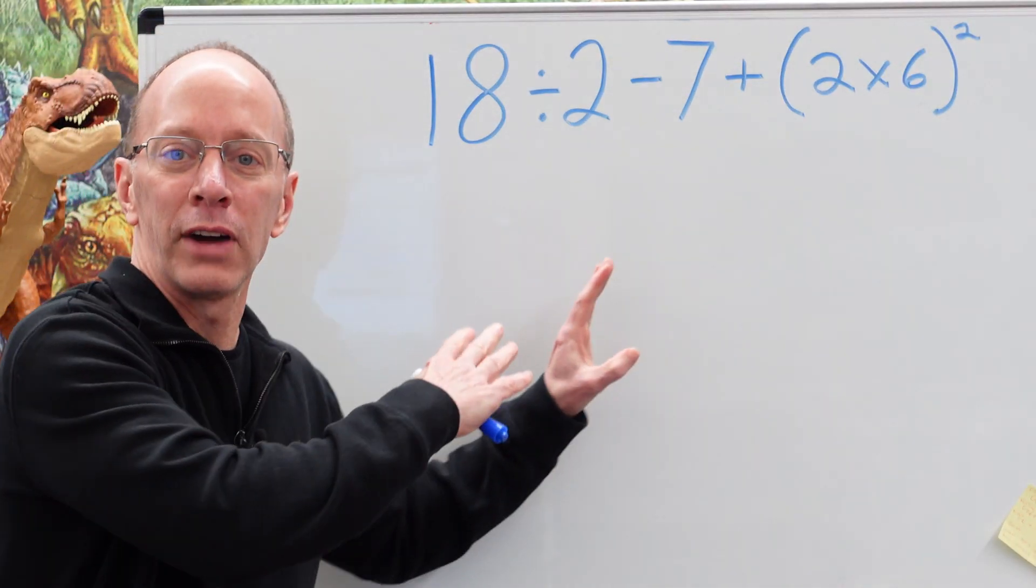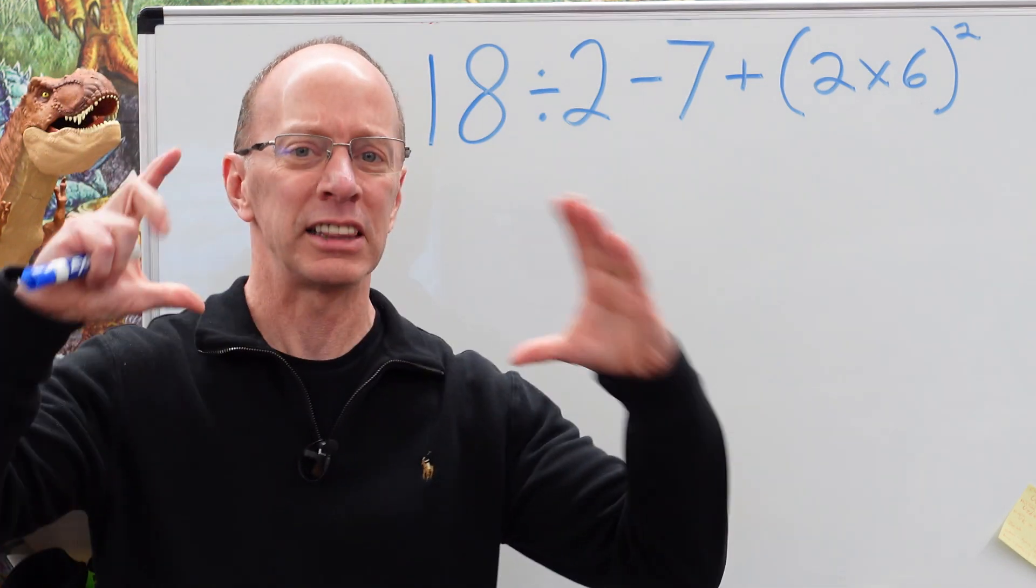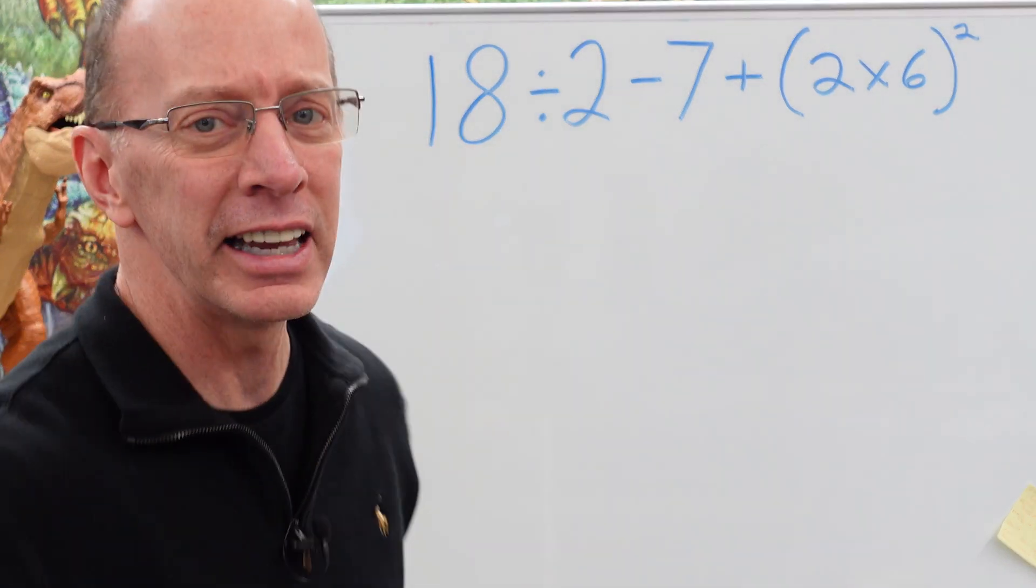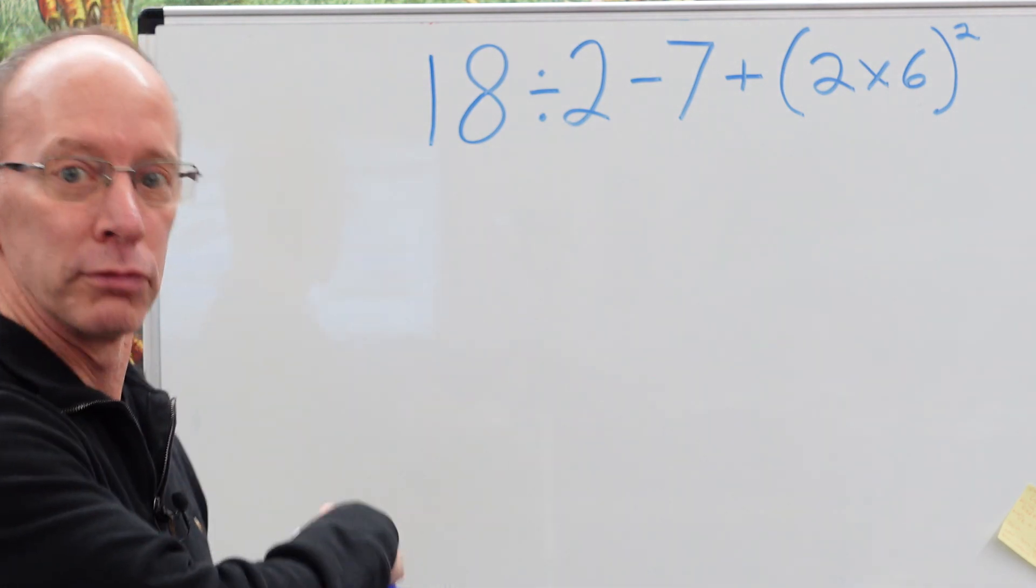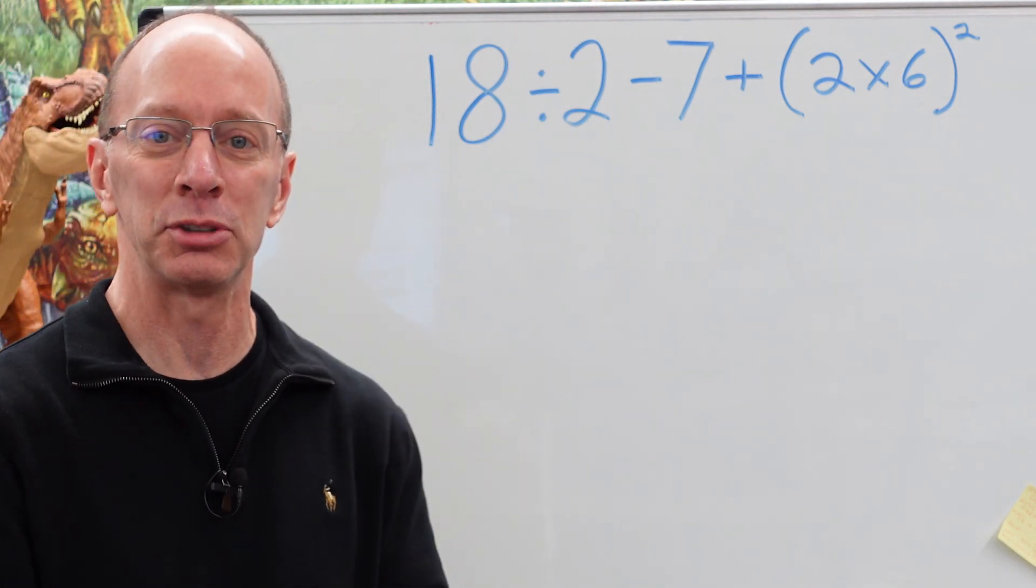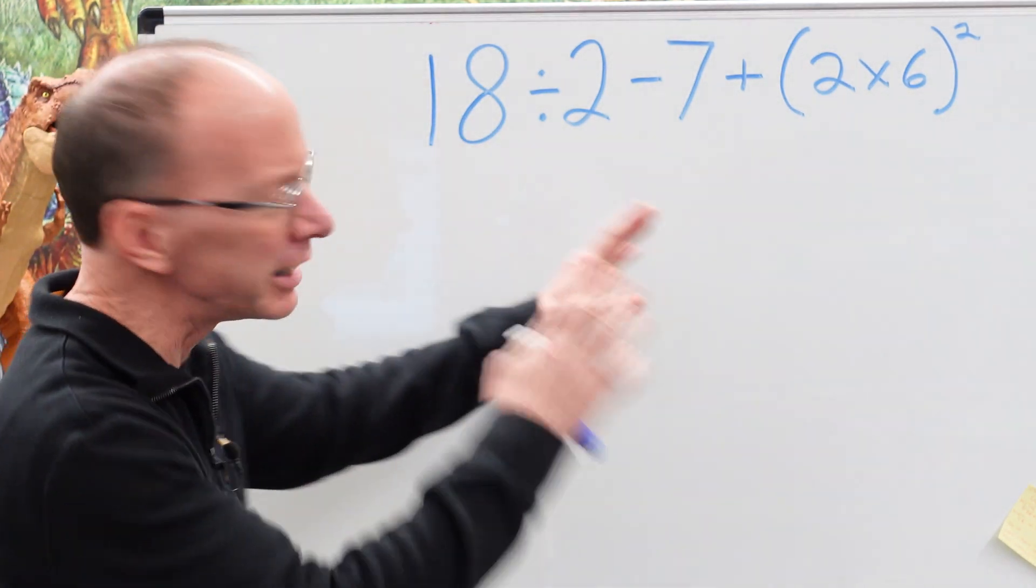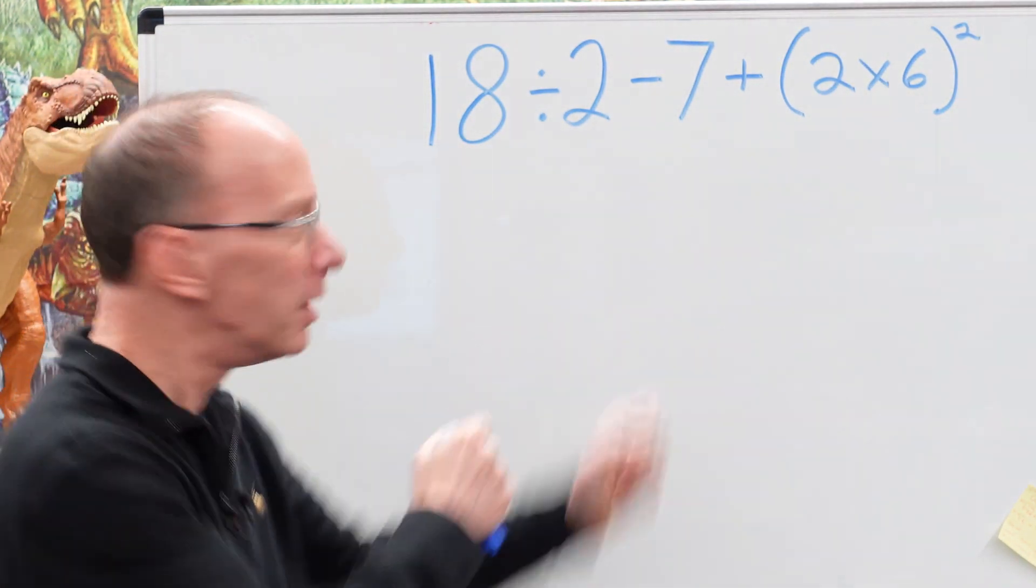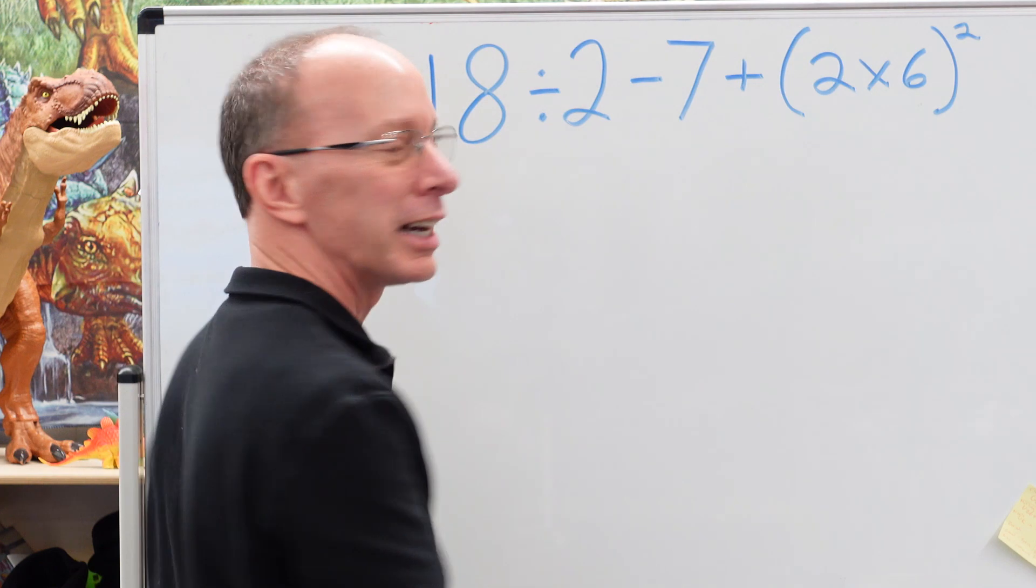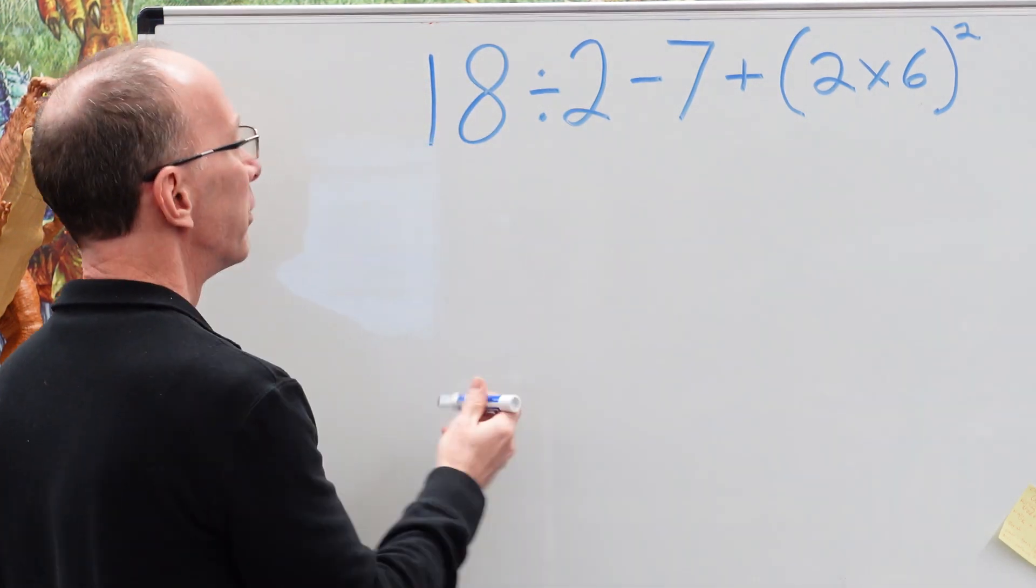Remember when we do order of operation, we do whatever's inside the parentheses first, then the exponent, then multiplication and division from left to right, and addition and subtraction from left to right. So, let's get started. Do you see any parentheses? I do. Right over here. 2 times 6.